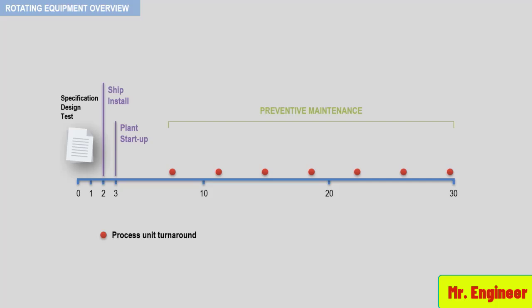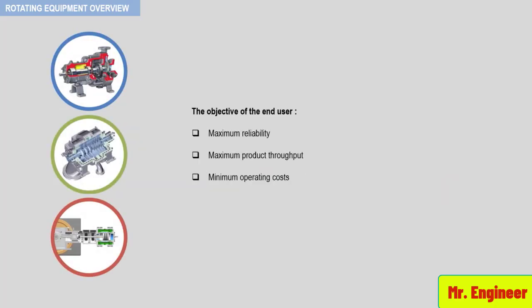The objectives of the end user of any type of rotating equipment — in other words, your objectives — are: maximum reliability, maximum product throughput, with minimum operating costs. So, in order to maximize the profit, you must meet these objectives.